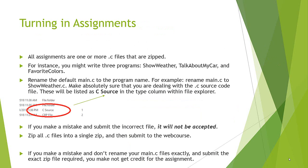For turning in assignments, all assignments are going to be one or more .c files, and they're going to be zipped. The file extension of the programs you're turning in are .c. For instance, you might write three programs: show weather, talk about my car, and favorite colors. When you run Code Blocks, it always gives you a file called main.c by default. You need to rename main.c to whatever the program is, like show_weather.c, talk_about_my_car.c, or favorite_colors.c. If you turn in main.c, it will not get graded.